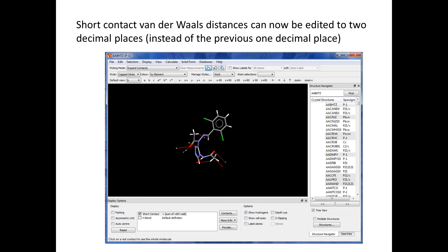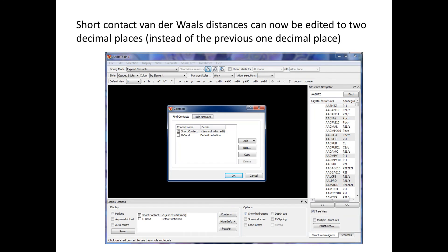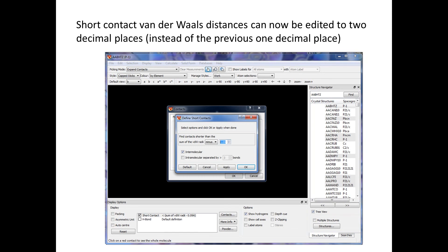We have also changed the way that the short contact van der Waals distances can be edited. Previously it was only to one decimal place, and now it is to two decimal places. Let's say that you have a molecule and you're expanding the contacts. If you go to edit the definition of the short contacts, you will now be able to input numbers up to two decimal places.